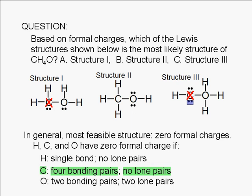In structure 2, carbon has four bonding pairs: one, two, three, four.